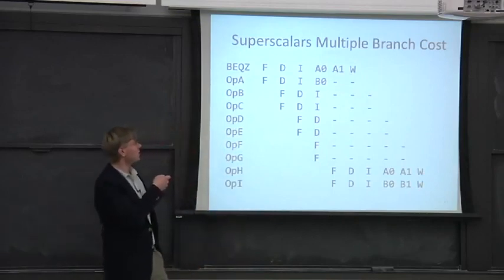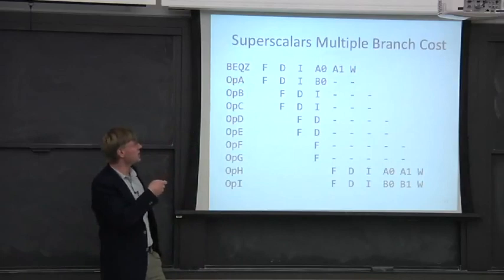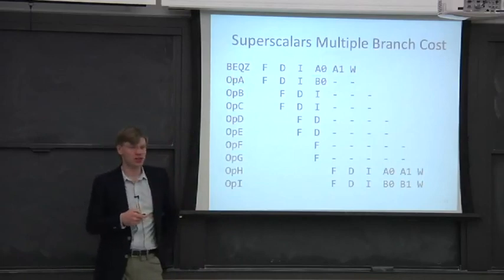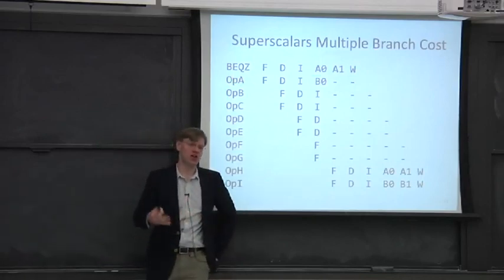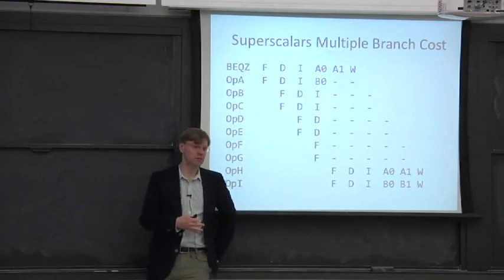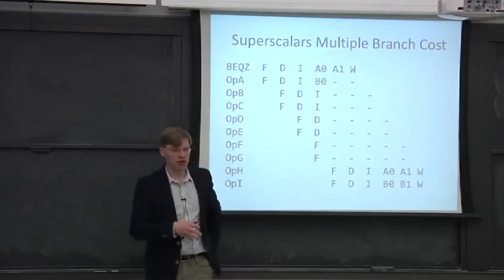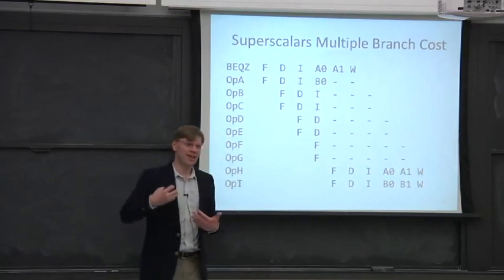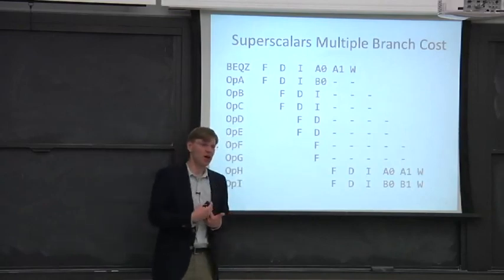And then instead of executing, let's say, op a here, which is a dead instruction, which is the incorrect branch target, we can try to fetch and try to execute the correct branch target. And we're going to have a whole lecture on how to get your branch prediction accuracy up.